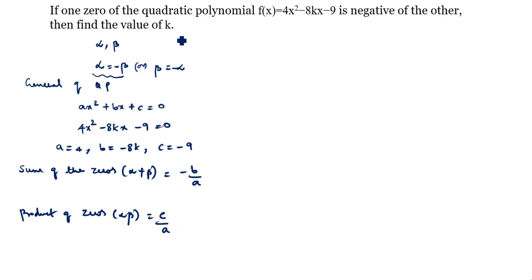What we need to find is the value of k. k is in b, where b = -8k. You see this formula? Which formula has b? -b/a is in the sum of the zeros, so we will take this formula. No need to take this one.